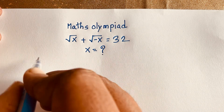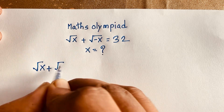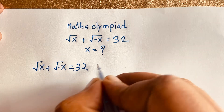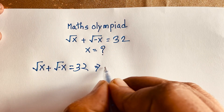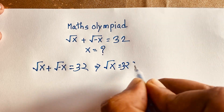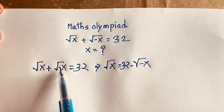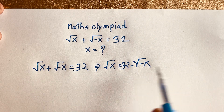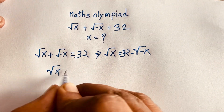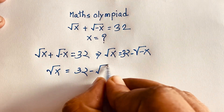So our question is: square root x plus square root of minus x is equal to 32. Now I can see this expression — square root x is equal to 32 minus square root of negative x. I just move this plus square root negative x to the other side, so it will be negative.